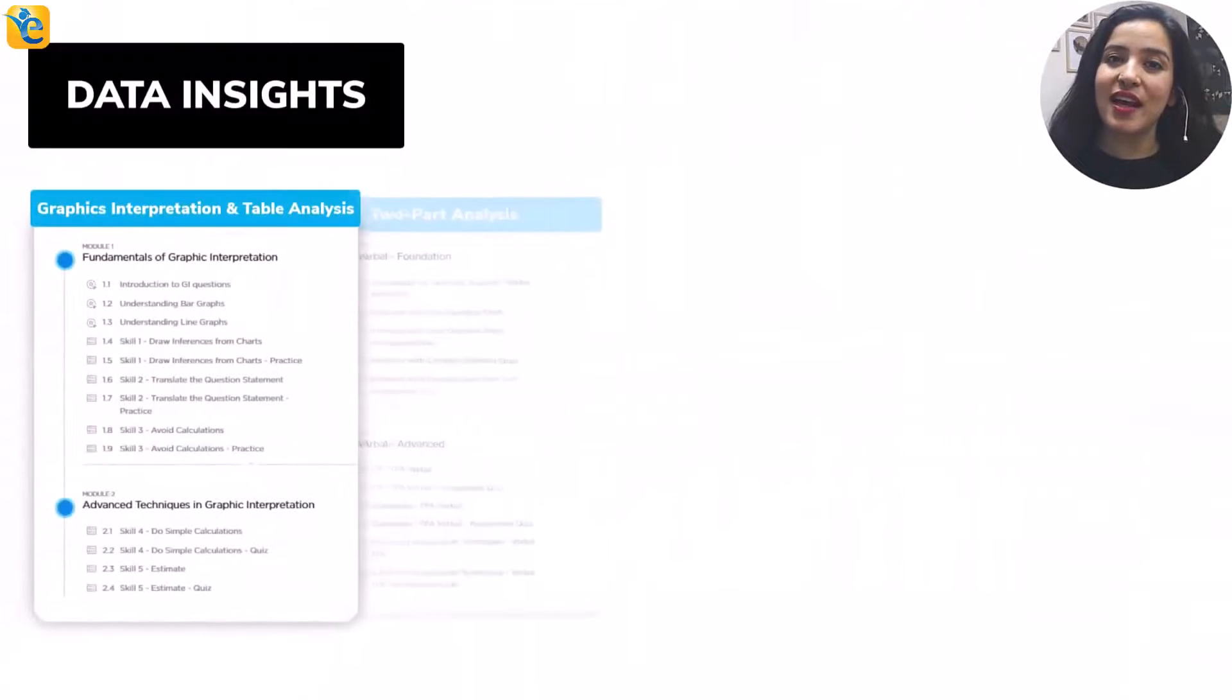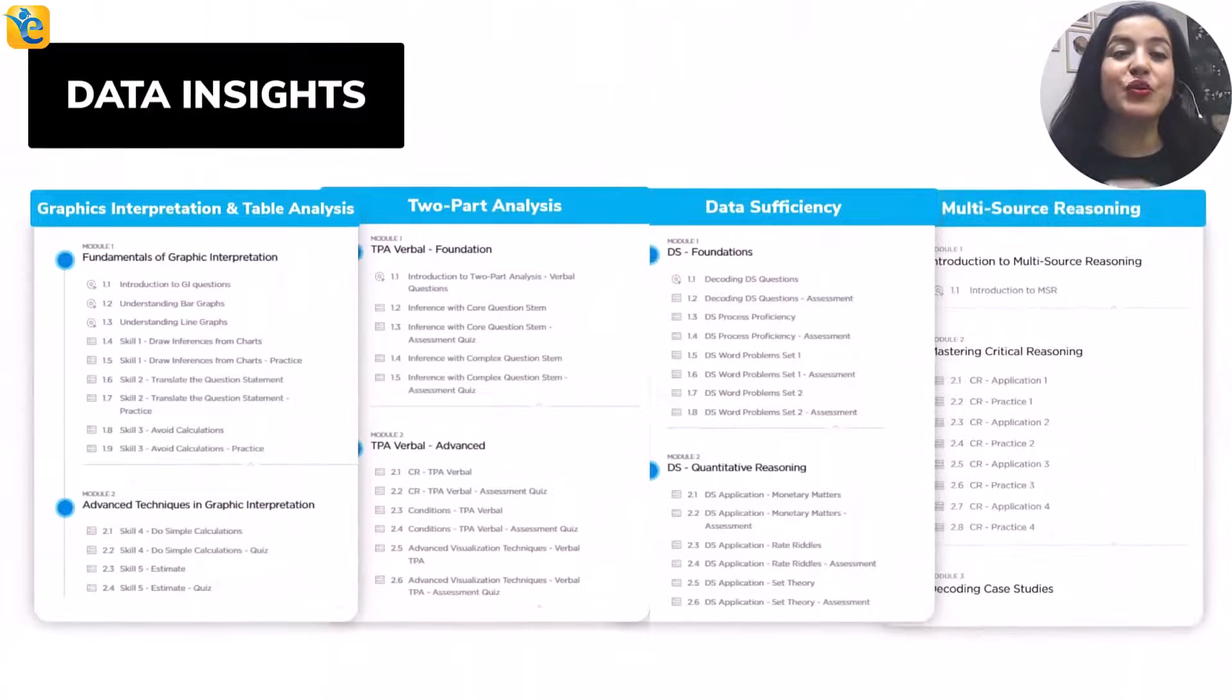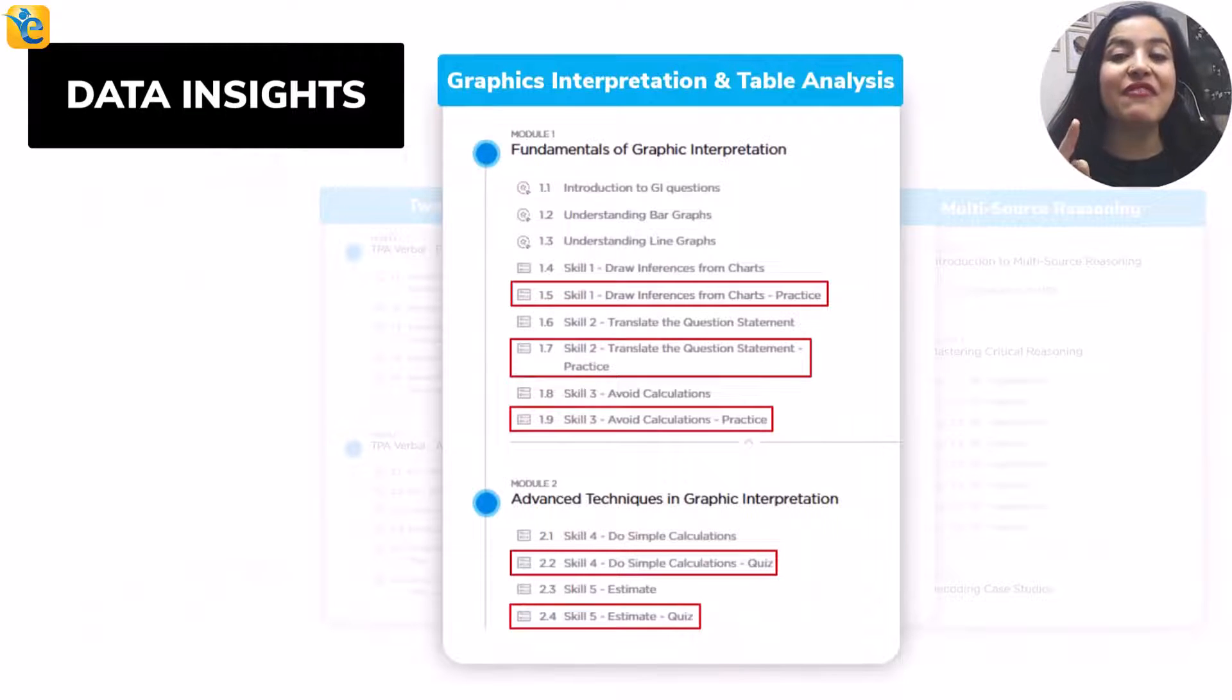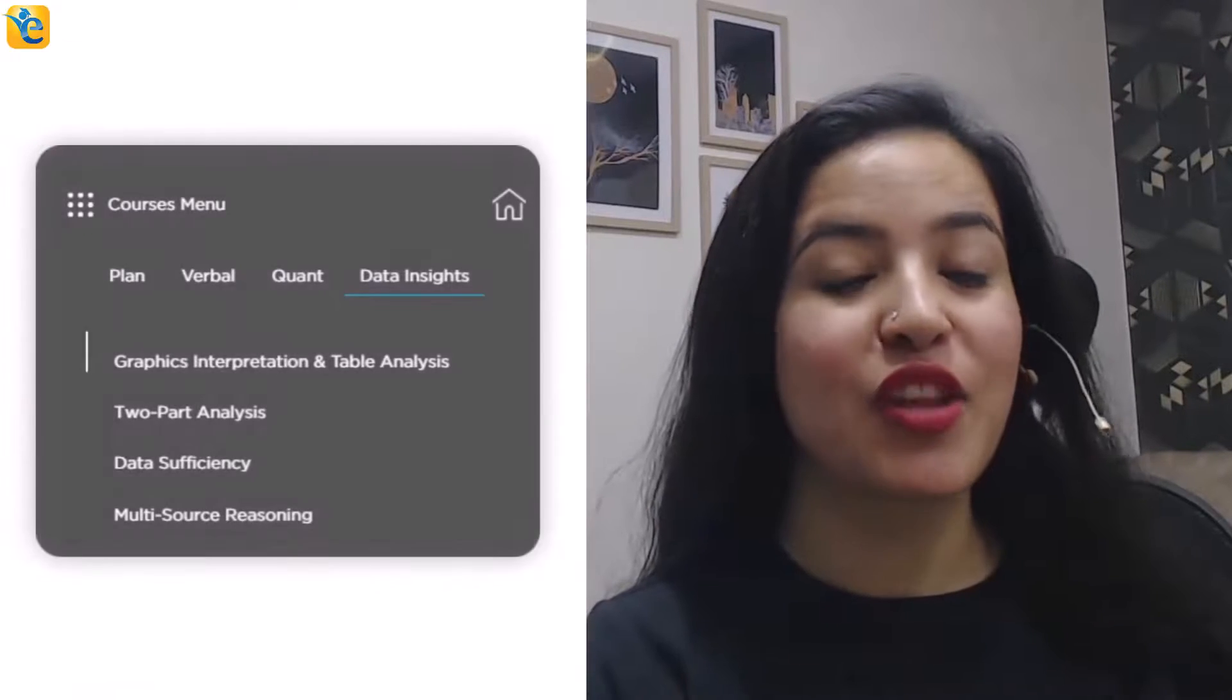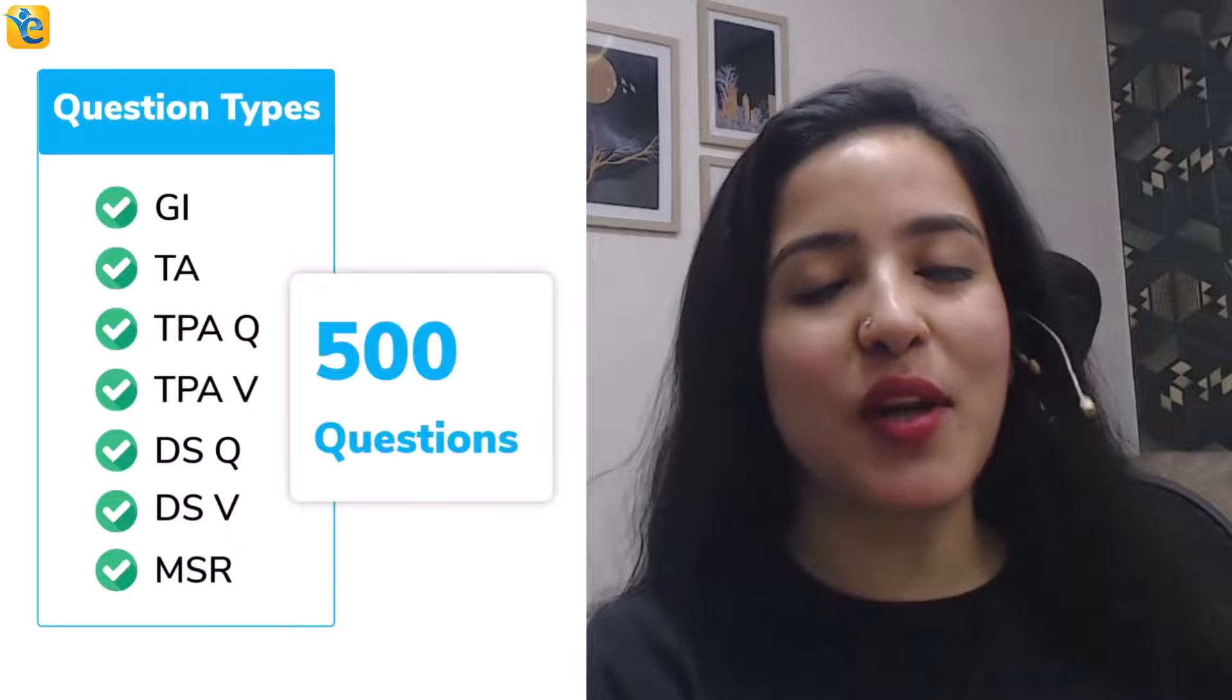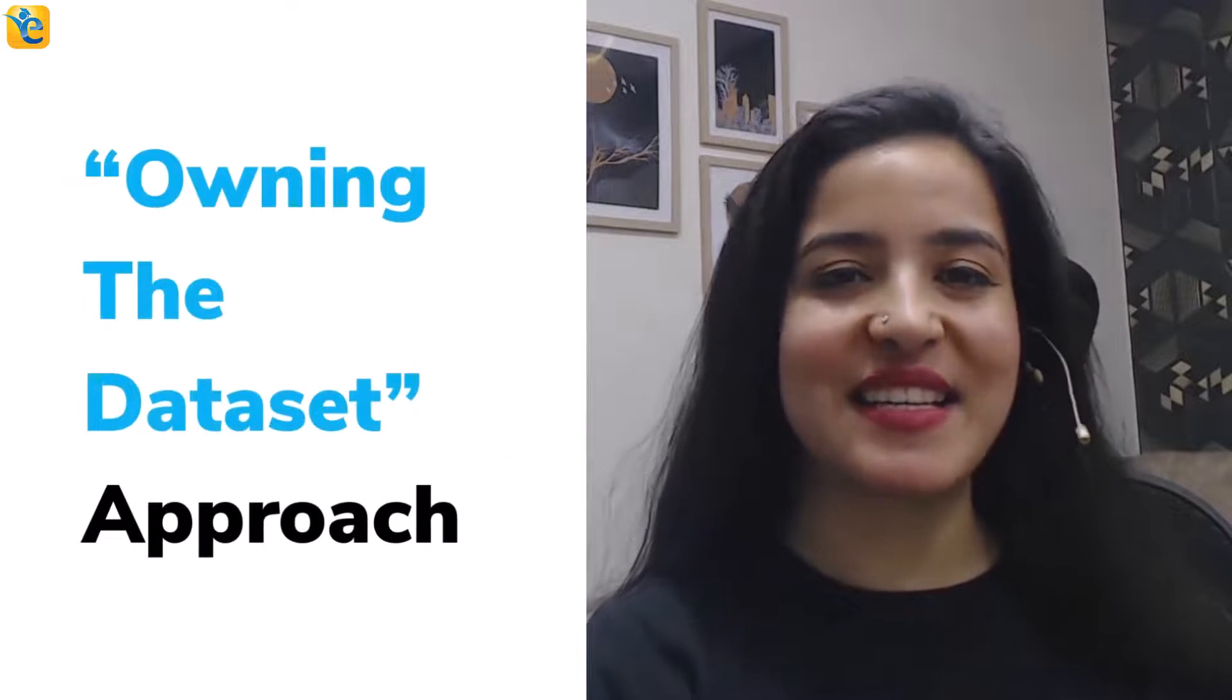At this point, let me ask you this: Could you have arrived at the approach of solving this question with this level of clarity had you not spent the effort in thoroughly understanding the information presented? Such is the power of the process of owning the data set. And because this skill may not come naturally to many of you, we have created a course architecture that ensures that we teach you this skill through every guided quiz in the EGMAT DI course. And we reinforce the same in every practice quiz. Thus, throughout the DI course, through around 500 questions, you will learn such process skills so that you can also comfortably use the owning the data set approach. Let's now get back to the solution at hand.